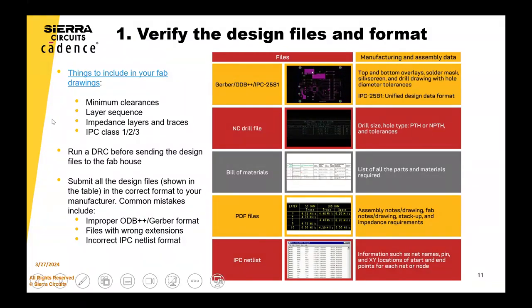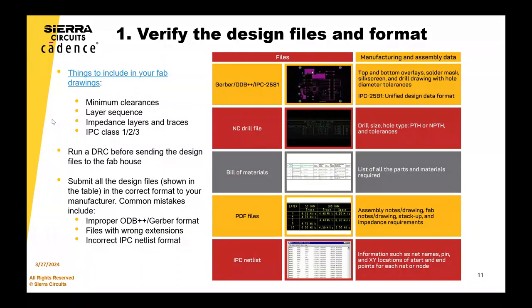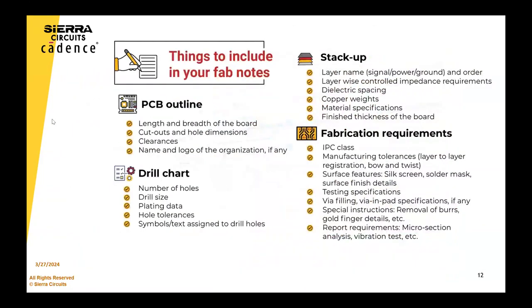One thing I want to point out: fabrication drawings are super important. Even if it's a standard design, try not to default to whatever the fabricator is going to do — try to specify things that are important to you. This is the bare minimum of what should go on your fab drawing. The way fabrication works is if you don't specify it, don't expect anything. The more you can specify what is critical to you, the better off you are. Sierra offers standard fab drawings you can import into your Cadence package if you're just getting started.